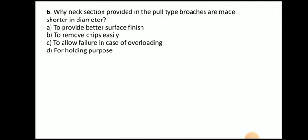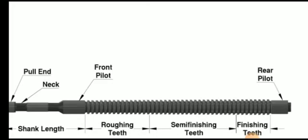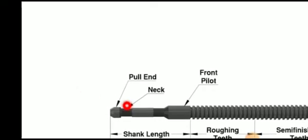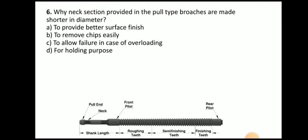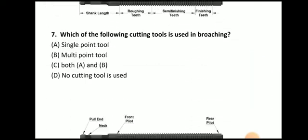Next question: why is the neck section in pull type broaches made shorter in diameter? The neck of the broach is shorter in diameter compared to the broach body. The answer is to avoid failure in case of overloading. The smaller diameter means higher stress concentration, so in case of overloading the neck section fails first, keeping the workpiece safe.